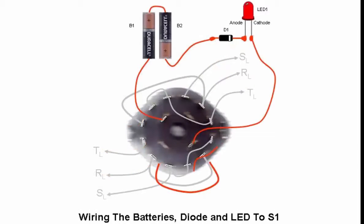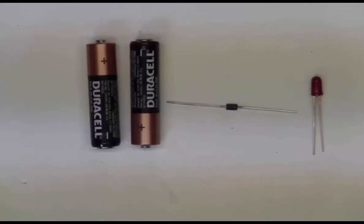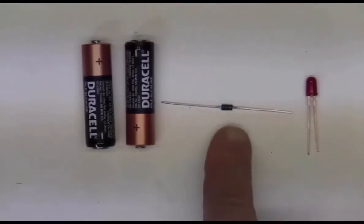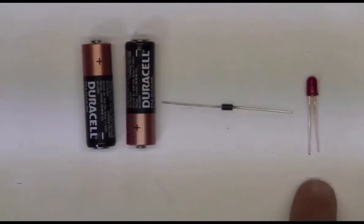And now we're up to wiring the batteries, the diode, and the LED. Here are the four devices we're going to wire together. The two batteries, the diode, and this is just a common diode, a 1N4001, and here's a red LED.